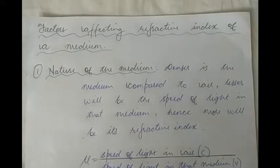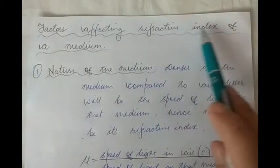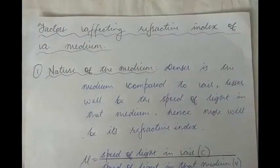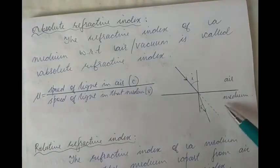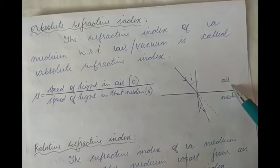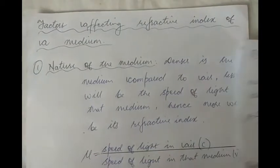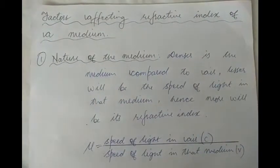After understanding absolute and relative refractive index, let us now look at the factors affecting refractive index of a medium. Refractive index means absolute refractive index — we are discussing the case where the first medium is always air. The first factor which affects the absolute refractive index is the nature of the medium.